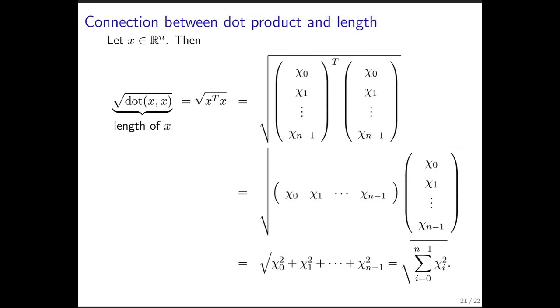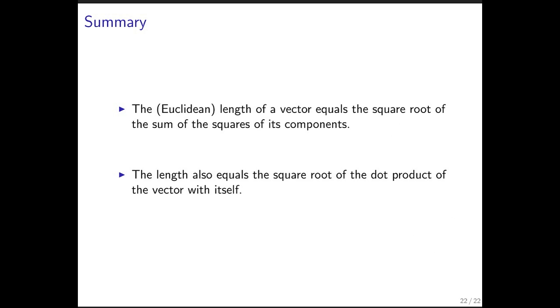In summary, the Euclidean length of a vector equals the square root of the sum of the squares of its components. This also equals the square root of the dot product of the vector with itself.